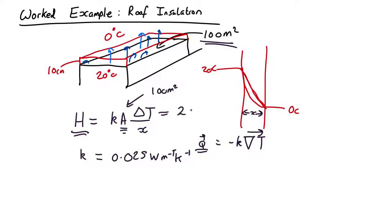It's going to be a temperature, so about 20, and X is 10 centimeters, which is 0.1 meters. So the heat flow is going to be 0.025 times 100 times 20 over 0.1,